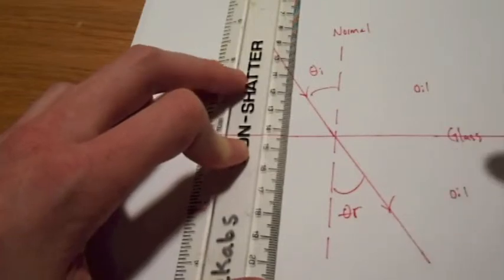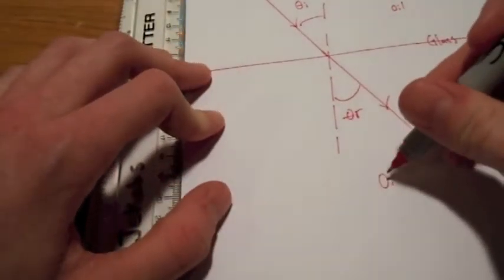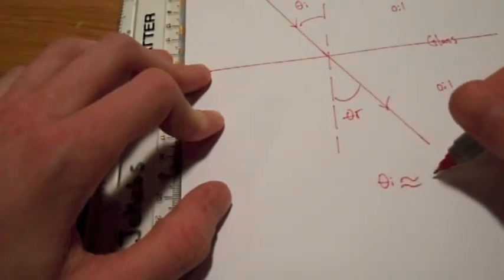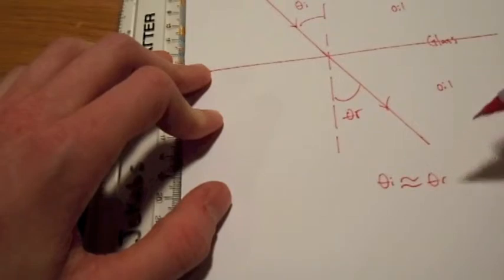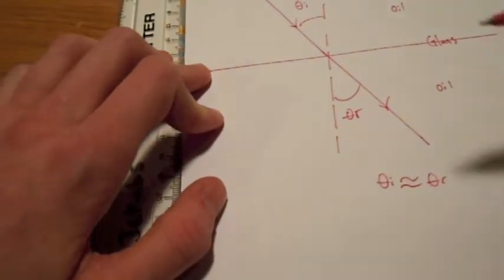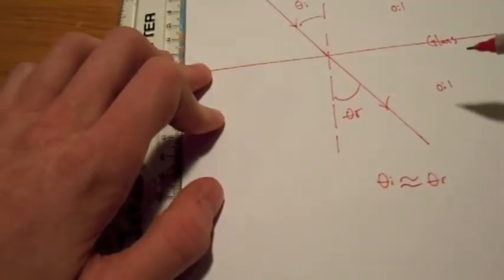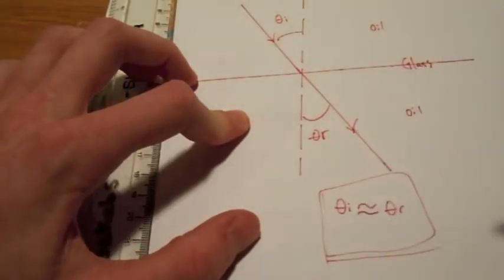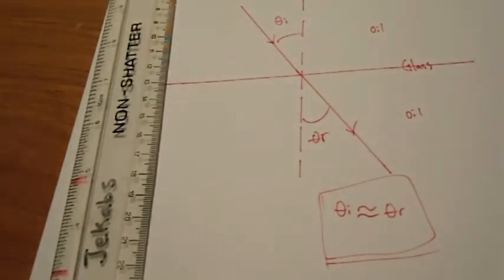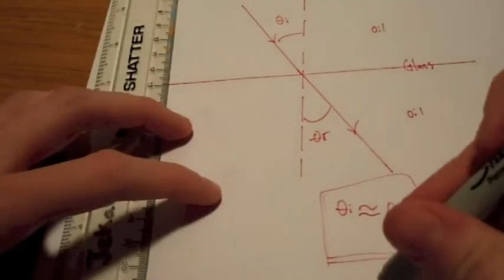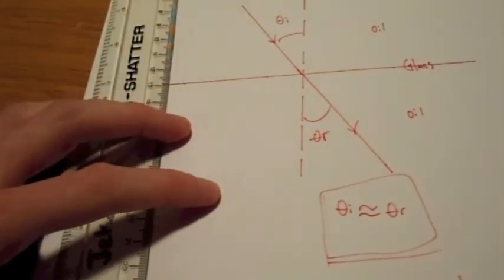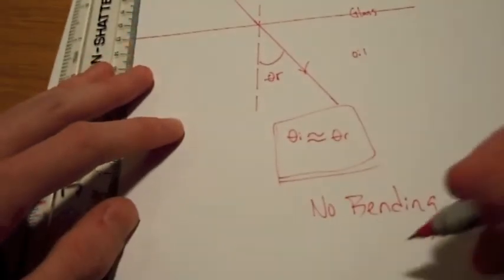I'm not going to say that they are equal, because obviously there's that tiny differentiation between the oil and the glass. But we can come to the conclusion that the angle of incidence and the angle of refraction are basically the same. Therefore, no bending or no refraction.